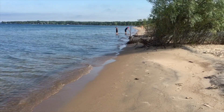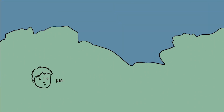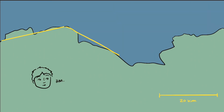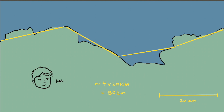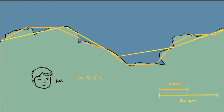If you wanted to measure the length of a coastline, you might start by looking at a map and deciding to measure its length in units of, say, 20 kilometers. For this section of the coast, you measure that its length is approximately 80 kilometers, but you see that you've left out some smaller details, so you decide to measure again with a smaller unit, 10 kilometers, and you get a larger answer.